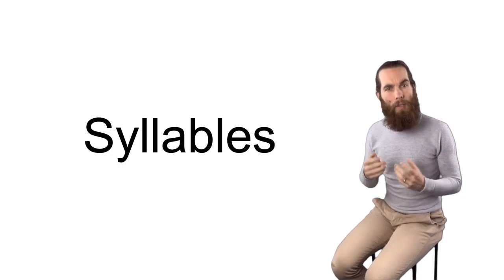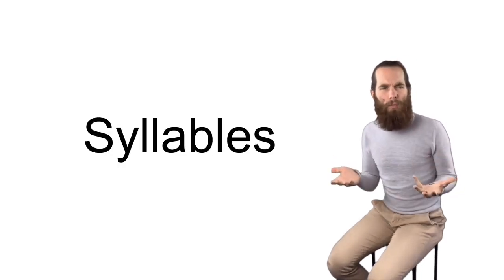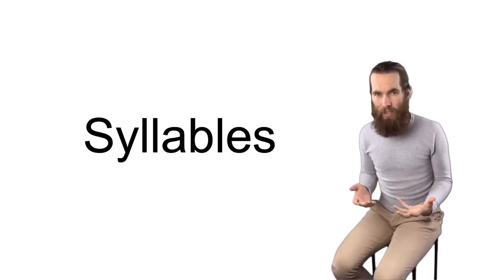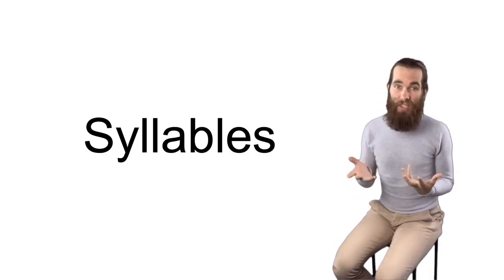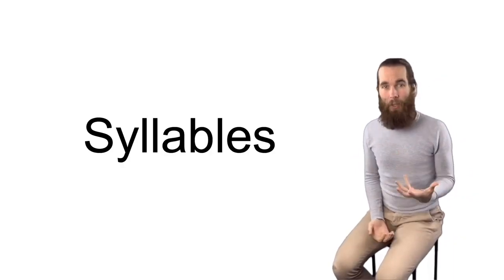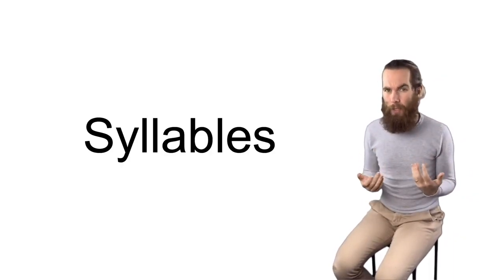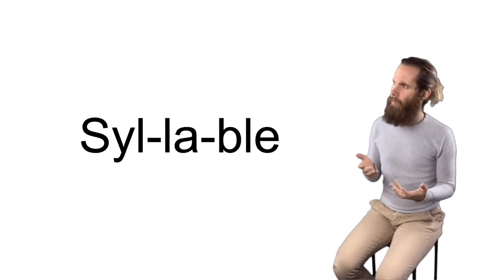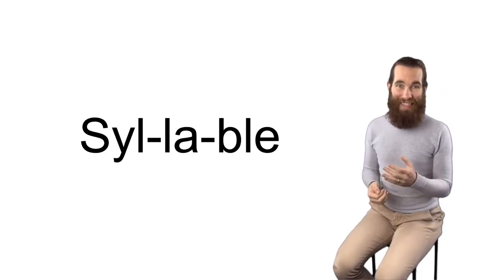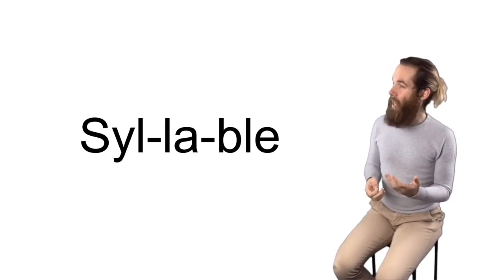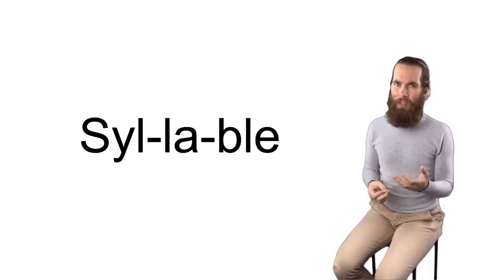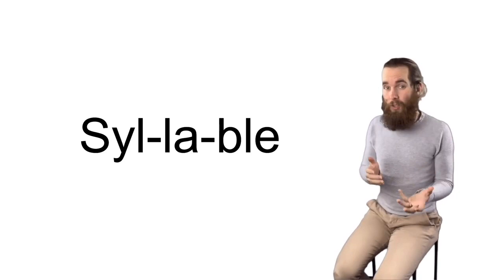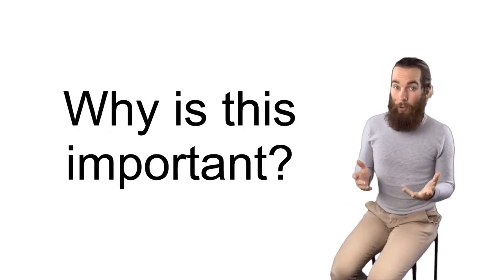But before we talk about writing haikus, we first need to think about syllables. What is a syllable? Well, a syllable is a part of a word that contains a vowel sound. Any time that you open your mouth is generally when a vowel is in a word. If we slow down how we speak, we can hear them pretty easily. Let's try it. Syllable. So we've got 'sil' which has an 'i' sound, 'la' which has an 'a' sound, and 'ble' which has an 'e' sound. Every word can be broken into syllables, and even if that's just one syllable. So why are syllables important for haikus?